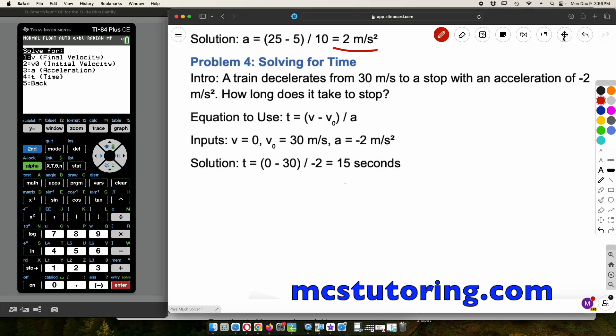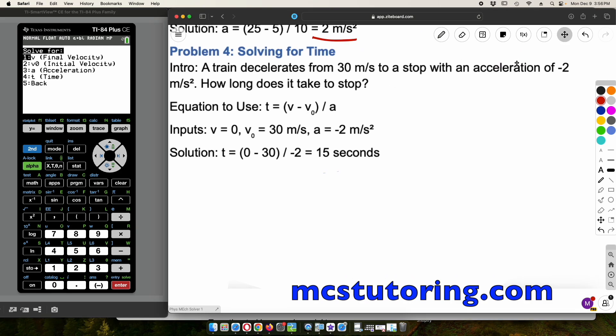Okay, now for the next one, it says a train decelerates from 30 meters per second. So that's our V0 is 30. To a stop. Velocity final is 0. So that's 0. I just want to write that there. Acceleration is A, is going to be negative 2 meters per second squared. How long does it take to stop? Well, guess what? We're solving for T.